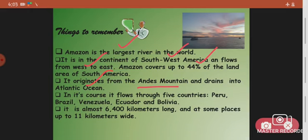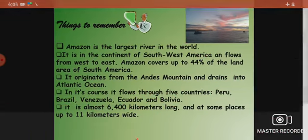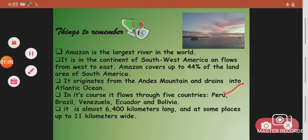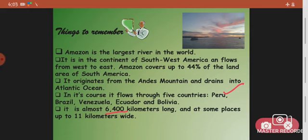While flowing, the Amazon passes through five countries: Peru, Brazil, Venezuela, Ecuador, and Bolivia. This is very important information — you have to remember the names of the countries through which the river flows. It is almost 6,400 kilometers long, and at some places 11 kilometers wide. If you're standing on one bank of the river you won't be able to see the other bank — it almost looks like a sea.